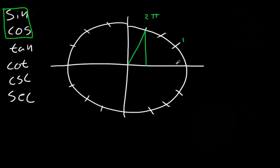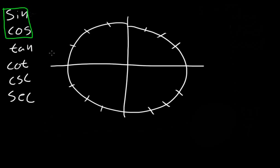Now let's work on a tangent problem. These are a little different because you need to find sine and cosine first. Tangent is equal to sine over cosine — the sine of a value divided by the cosine of a value.